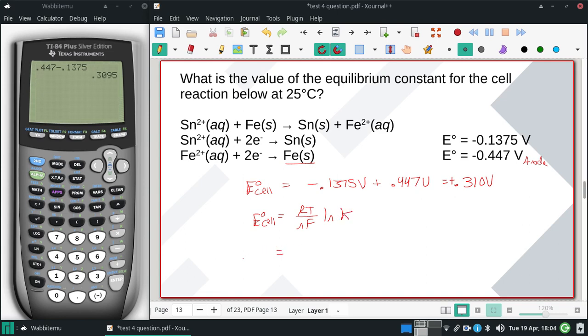So we're going to start plugging some things in. This is going to be that 0.310. Our R is going to be that 8.314 joules per mole kelvin. Temperature is 25 Celsius or 298 kelvins.